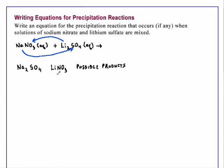So in this example, there is going to be no reaction. So we'll just indicate this by writing NaNO3 aqueous plus Li2SO4 aqueous. We'll write the arrow and then we'll write no reaction.